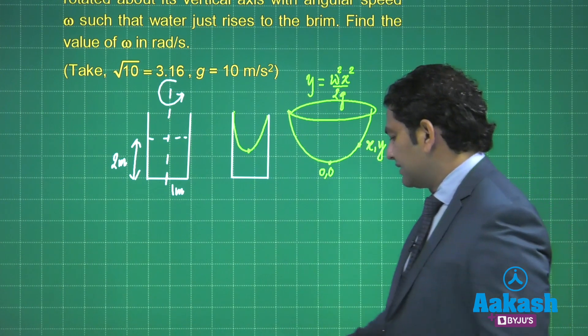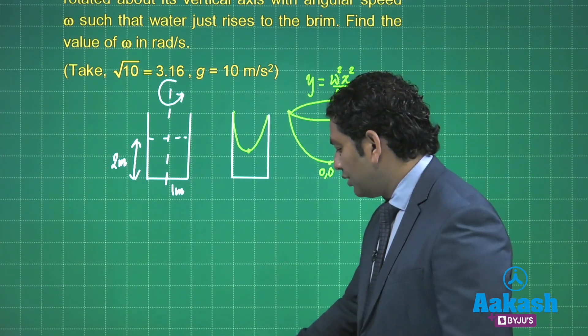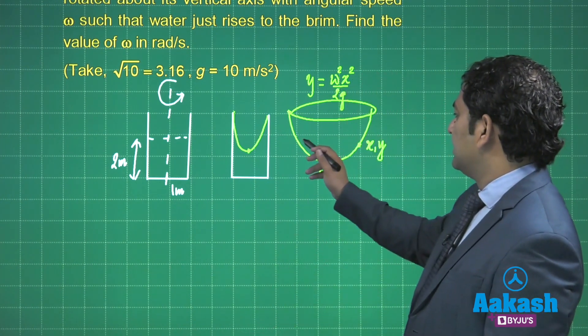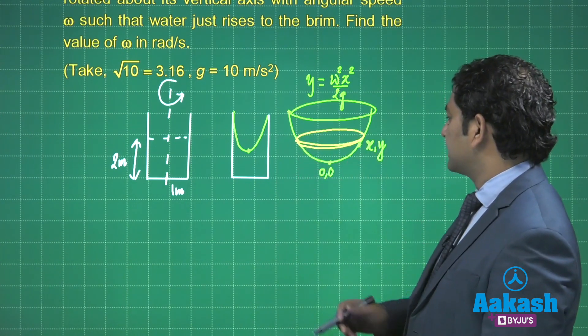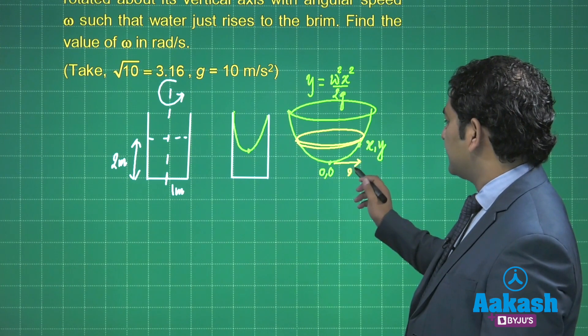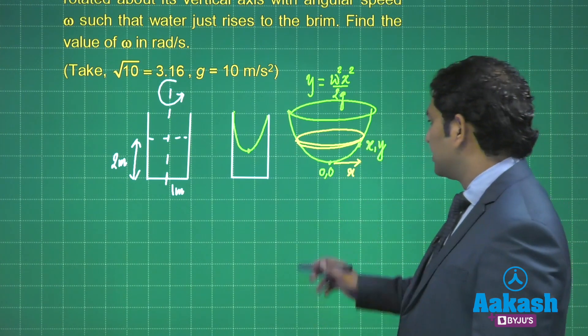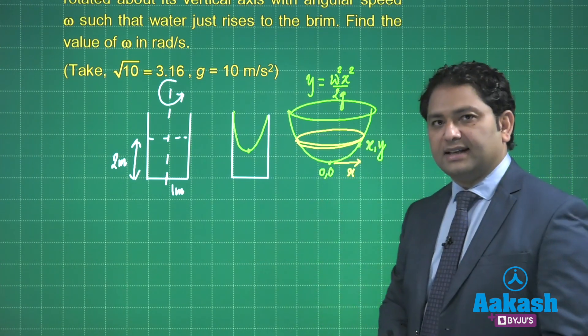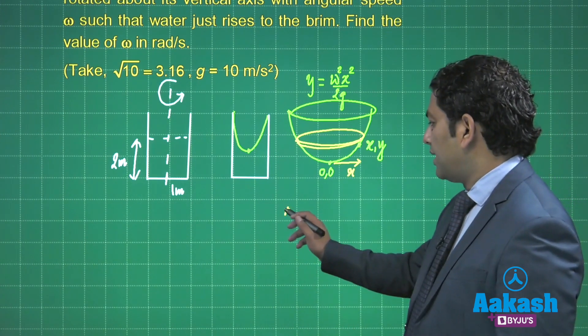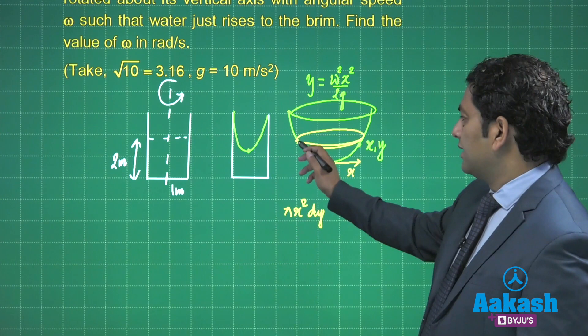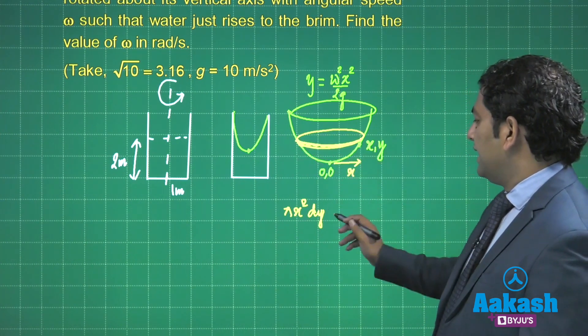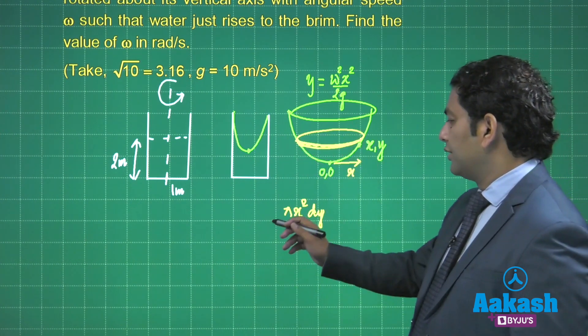It's better, let's use our power of calculus. I can just assume this to be an elementary disk here at a distance x, height y. How much would be the volume of that disk? That's going to be πx²dy.